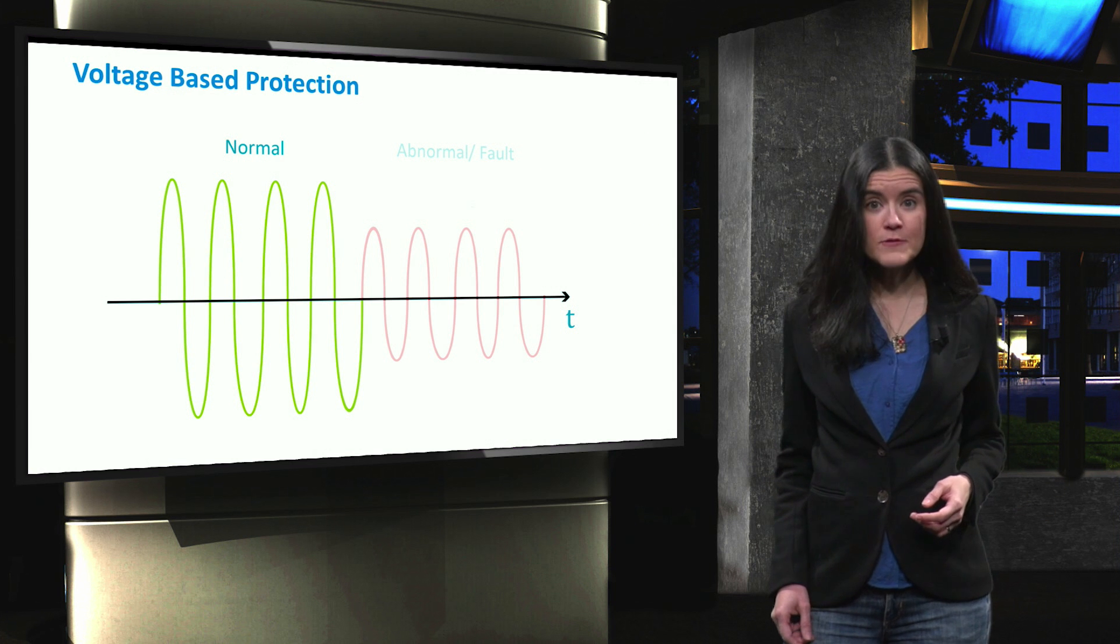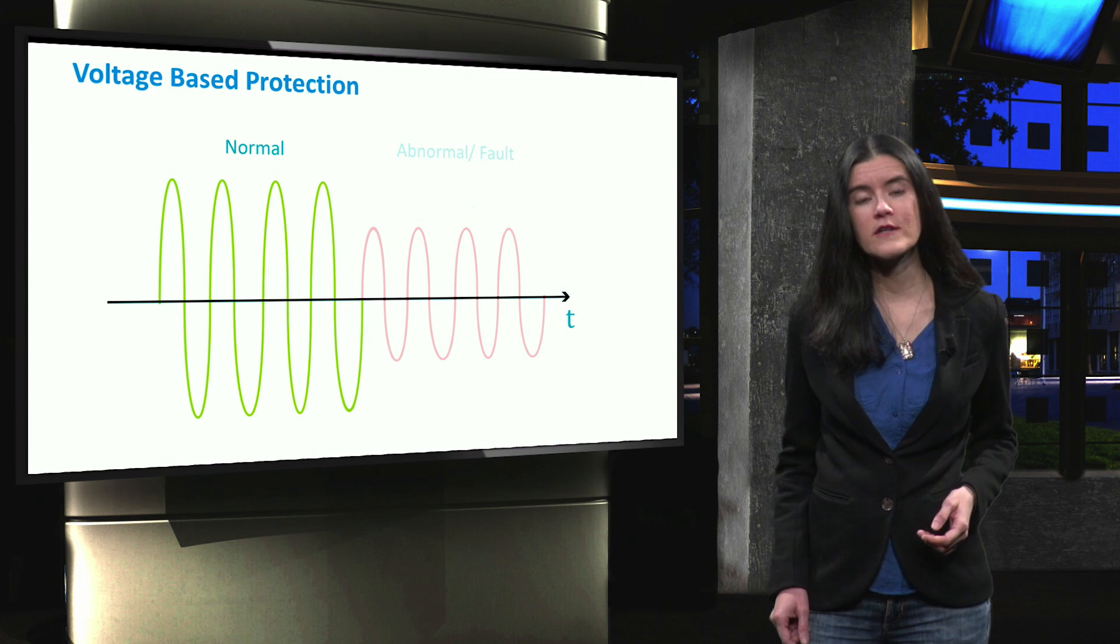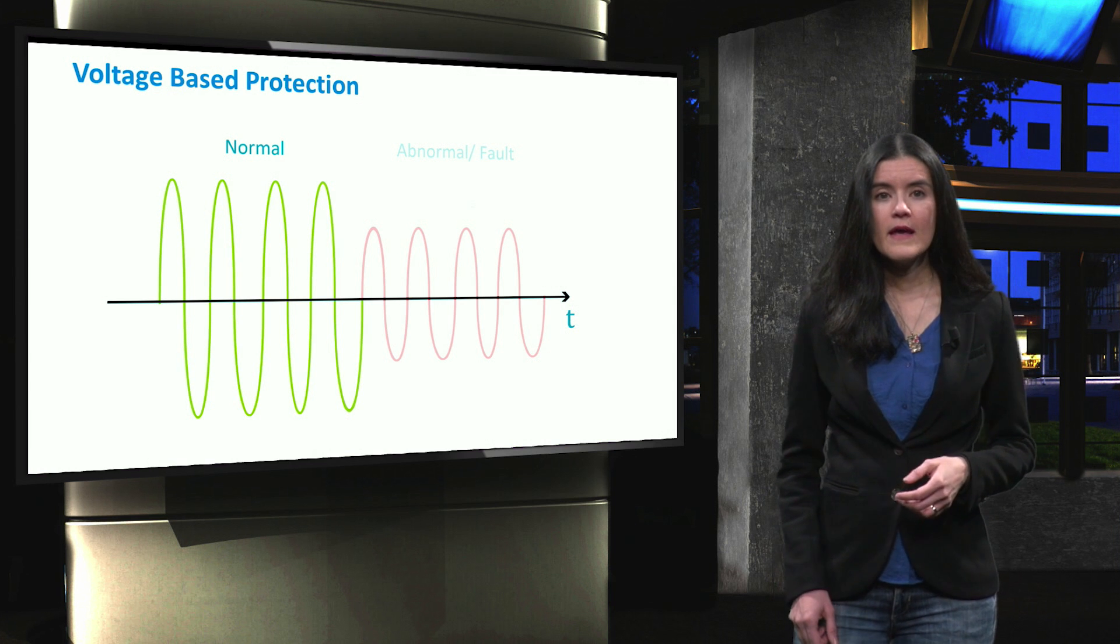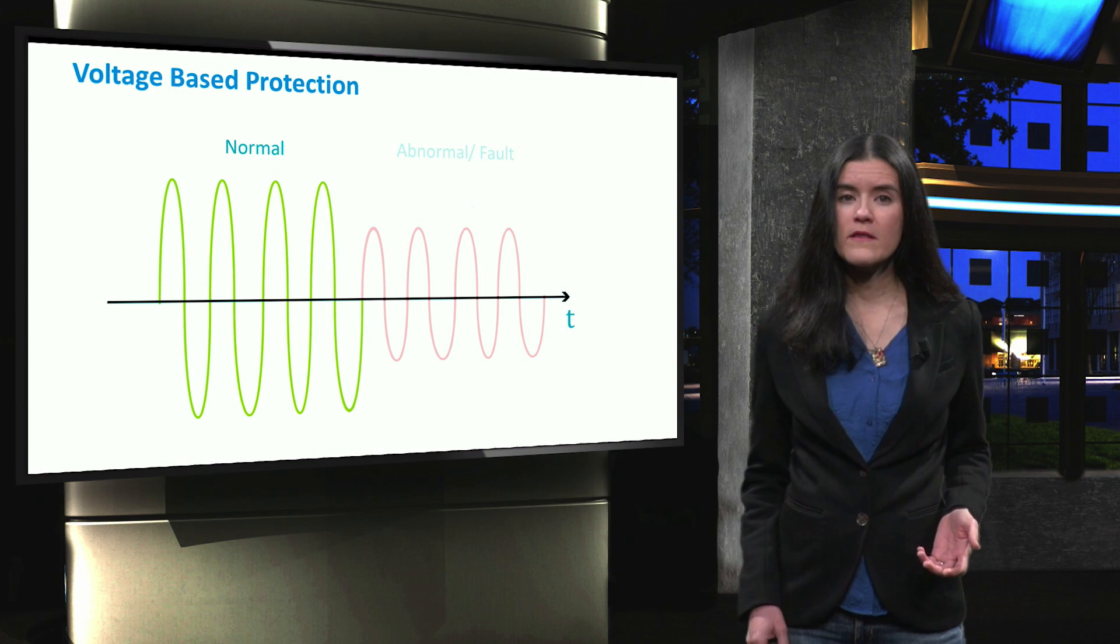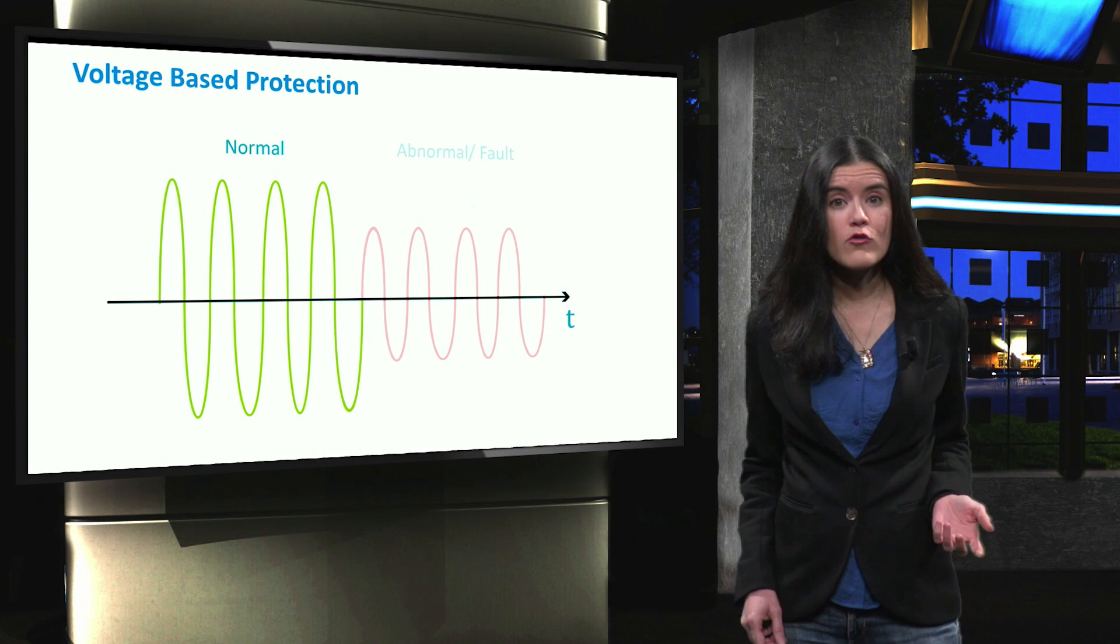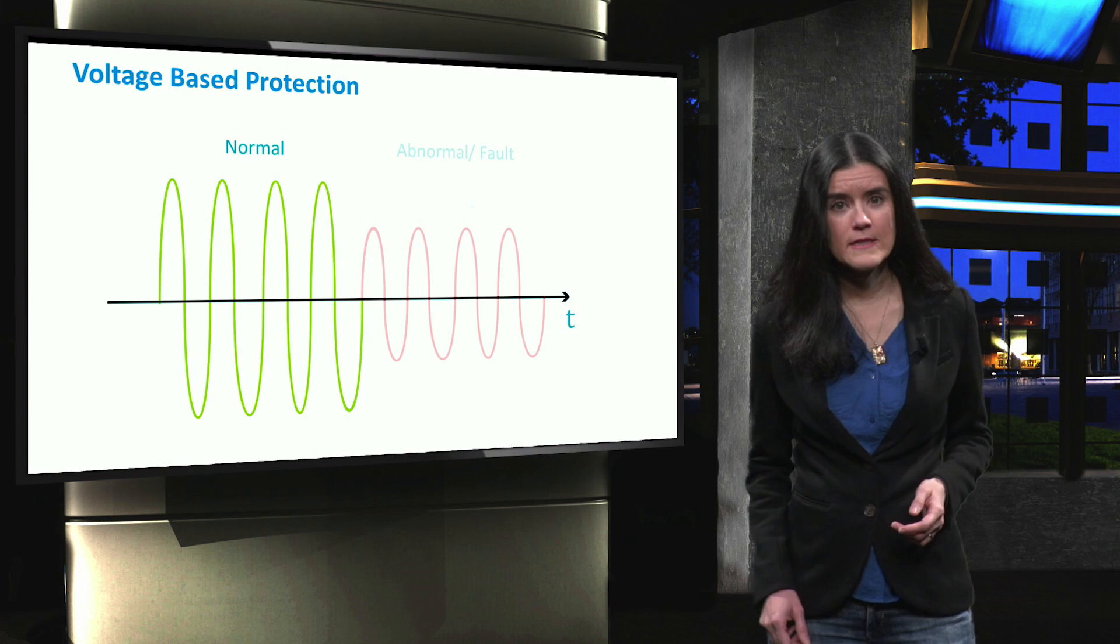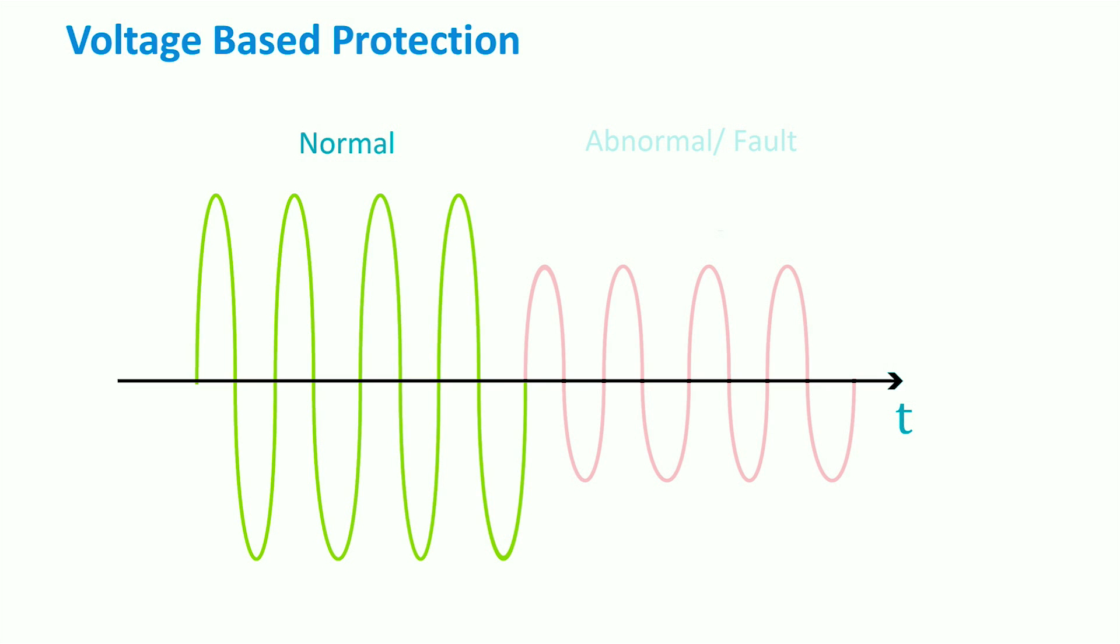Let's now look at the voltage-based and distance-based protection methods. In the voltage-based protection method, the RMS value of the voltage of the distributed generator is measured constantly. During normal operation, the RMS value should be above 88% of the voltage rating. This condition is also called an out-of-zone fault.